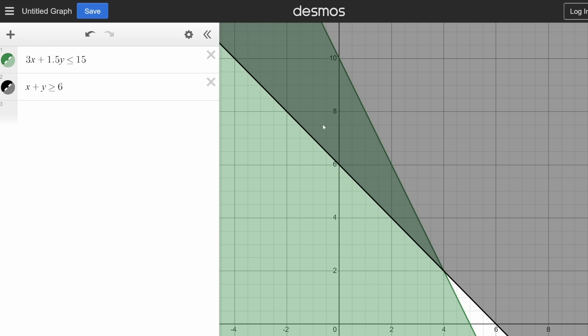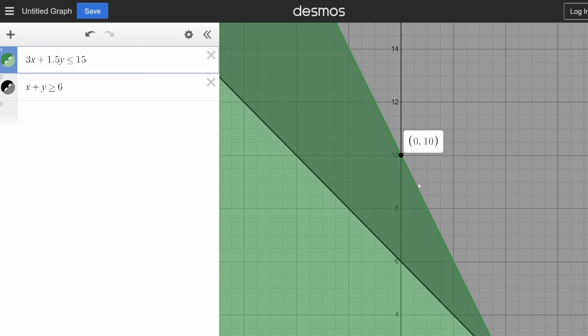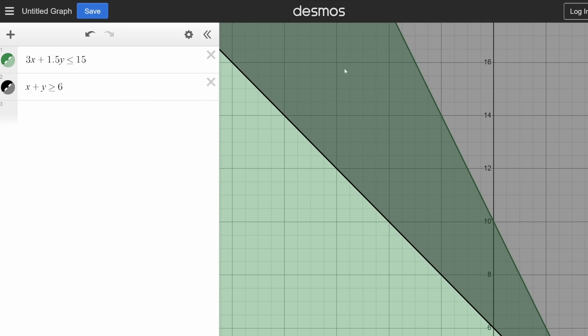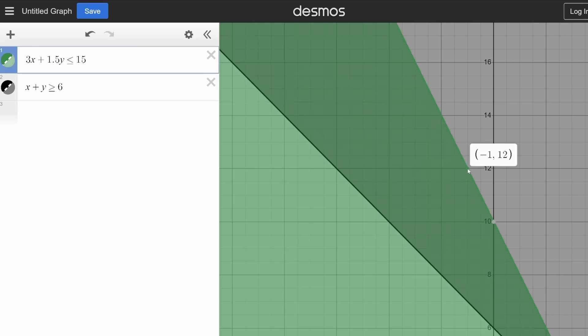In this case, bananas are Y, so we want to take the greatest Y within our region, which is going to be 10. And you might be thinking, well, aren't there a lot of numbers greater than 10? Like, we're still in the shaded region when we're at Y equals 12, or Y equals 14, or Y equals 16. But look at what happens to X. Our X has to be negative for us to buy more than 10 bananas. That means we're buying negative three apples to pay for our 16 bananas.